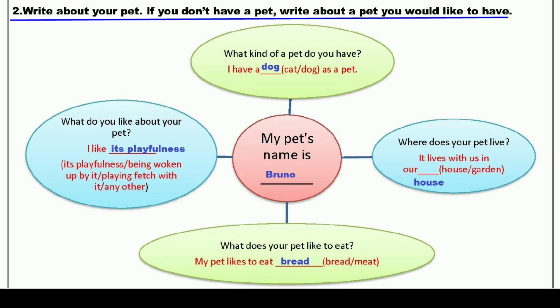سب سے پہلے: My pet's name is — میرے پالتو جانور کا نام ہے۔ جس کے پاس pet ہے، وہ اپنے pet کا نام لکھیں گے — جیسے میں نے for example 'Bruno' لکھا۔ اور اگر pet نہیں ہے اور آپ چاہتے ہیں کہ ہمارے گھر میں ہو، تو آپ اس کا نام کیا رکھیں گے، وہ لکھیں گے۔